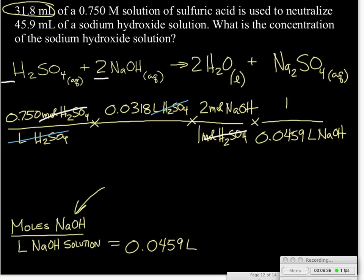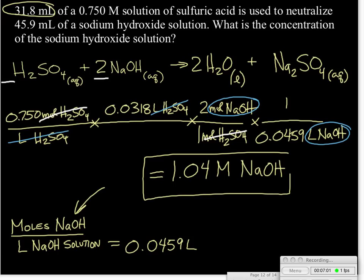And looking at our units, the units that we have left here, we have our units of moles of NaOH per liter of NaOH. That's our molarity. So we can go ahead and calculate this. And we find that we have 1.04 molar NaOH is the answer to this particular problem.